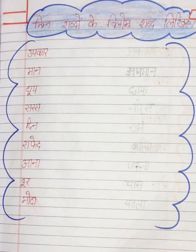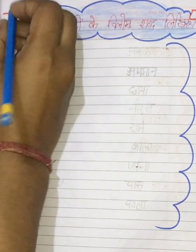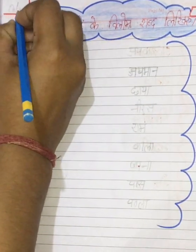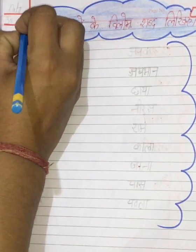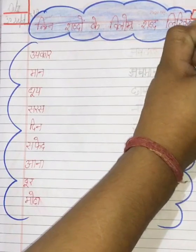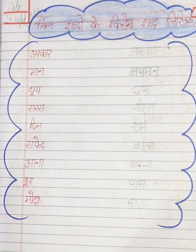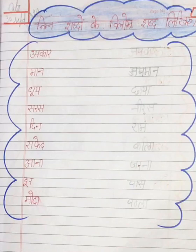Good morning to all of you. Welcome to online classes. Today's date is 13 September 2020 and the day is Wednesday. First of all, write down the date 13 September 2020 and also write down CW. Now take out your Hindi notebook and open it. Today's topic is: नामतः शब्दों के विलोम शब्द लिखिए।